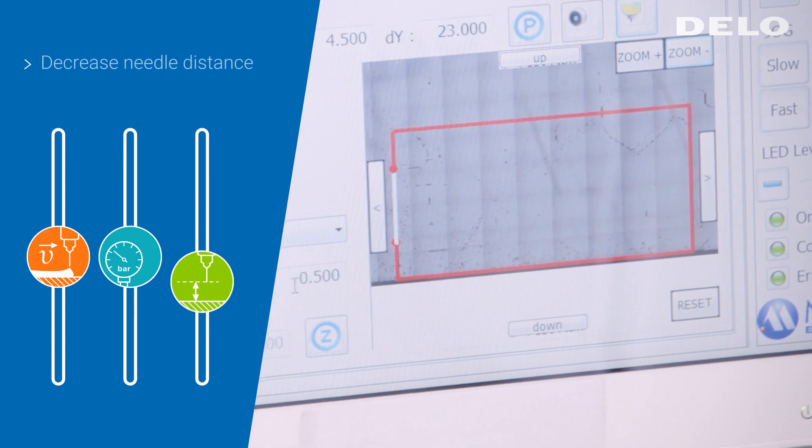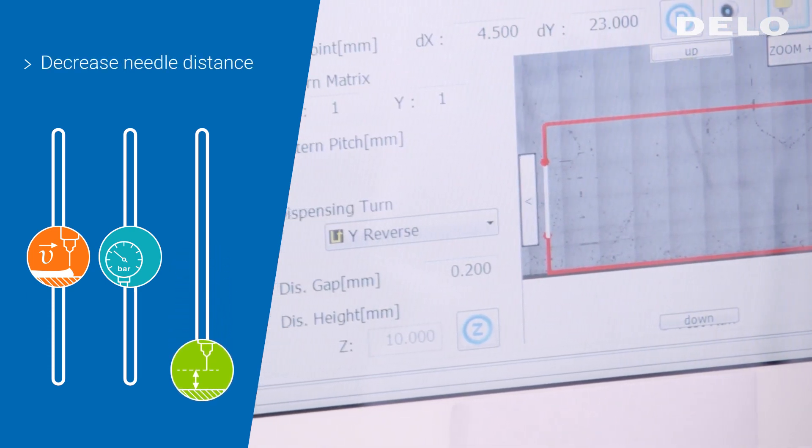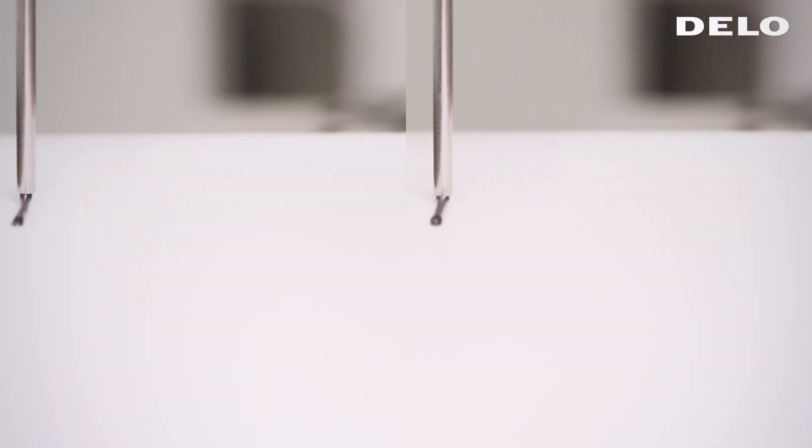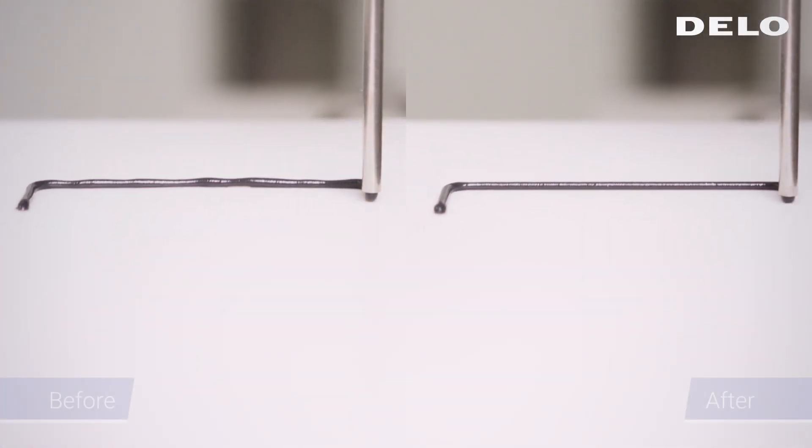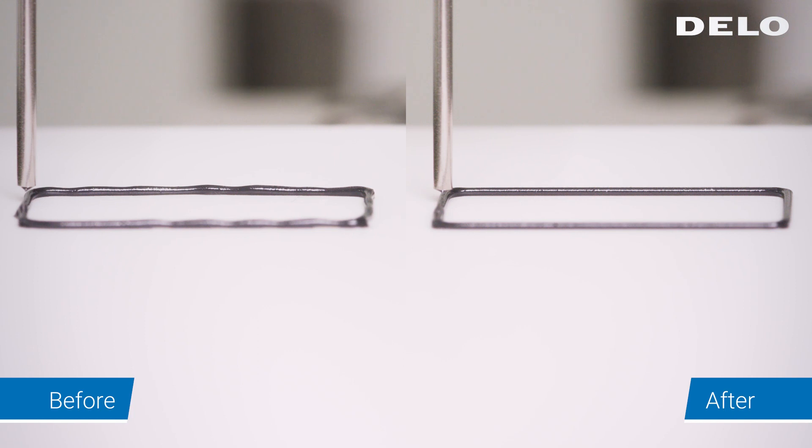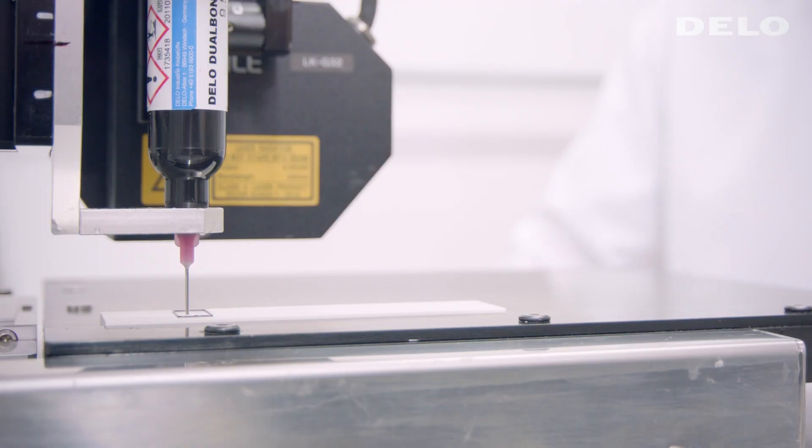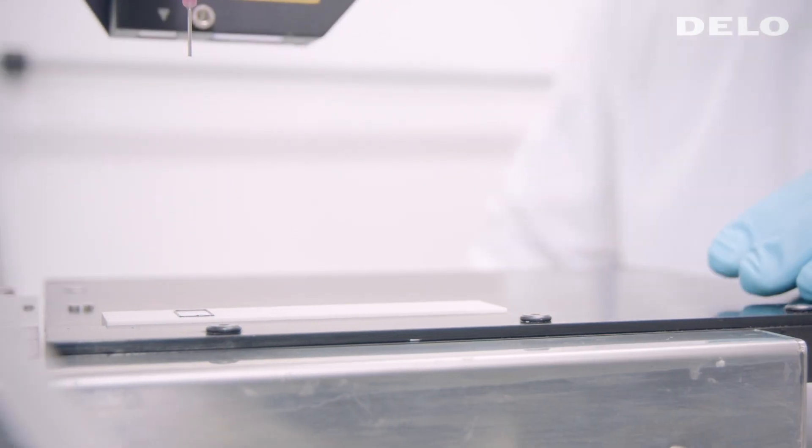Finally, you can decrease the needle distance to the material. This allows for more direct application and prevents the dispensing bead from being torn off. For optimal dispensing, the right balance between all three parameters is essential.